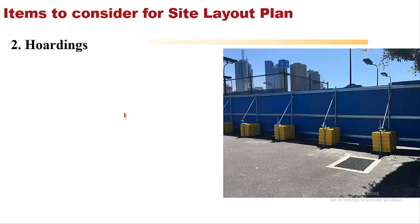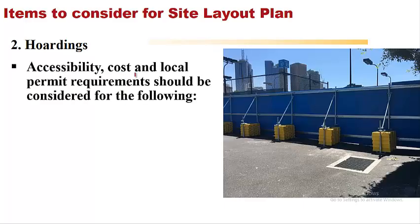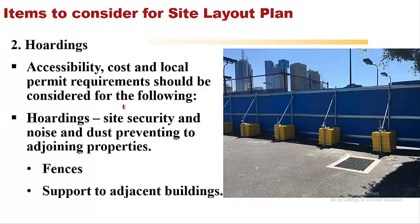Second point is hoardings. Accessibility, cost, and local permit requirements should be considered. Hoardings are for site security and noise and dust prevention to adjoining properties. These hoardings should be installed on the sides of the construction site so that adjacent sites are not affected by your working. It could also be fences or support to adjacent buildings.